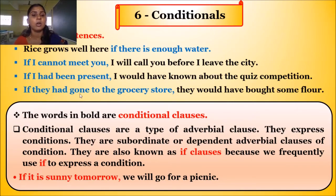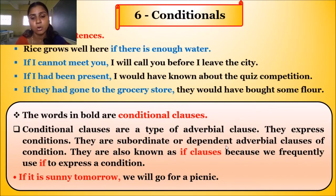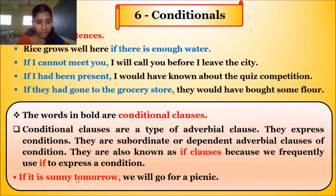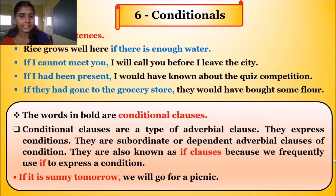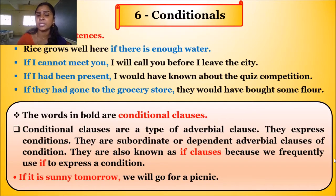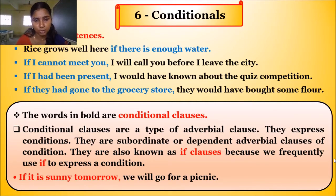The words in bold are conditional clauses. Conditional clauses are a type of adverbial clause — they are subordinate or dependent adverbial clauses of condition. They are also known as if clauses because we frequently use 'if' to express a condition. For example: 'If it is sunny tomorrow, we will go for a picnic.' Conditional sentences are statements discussing known factors or hypothetical situations and their consequences.